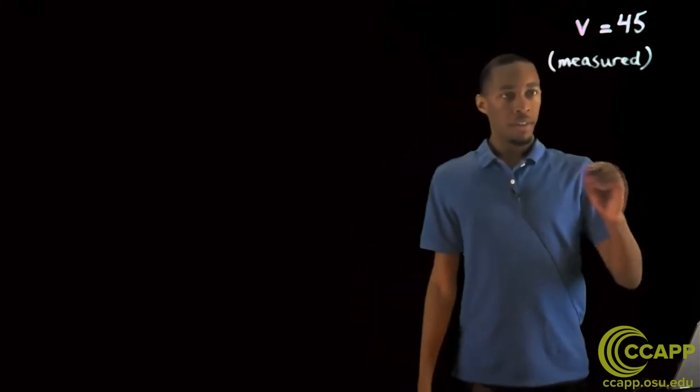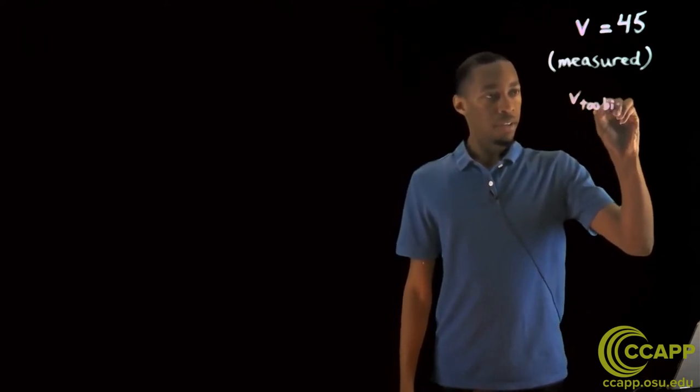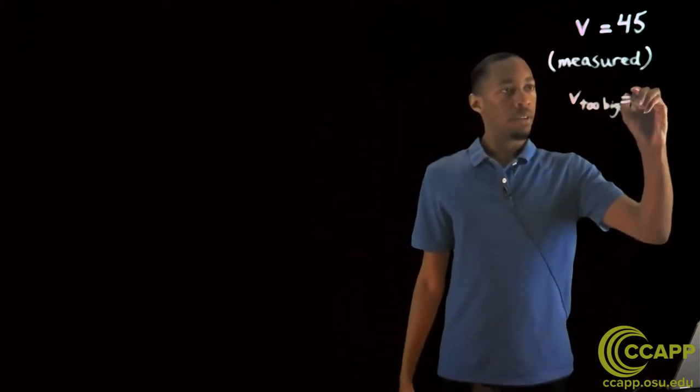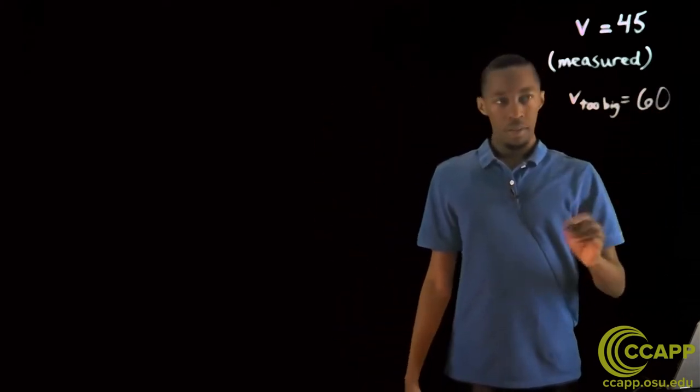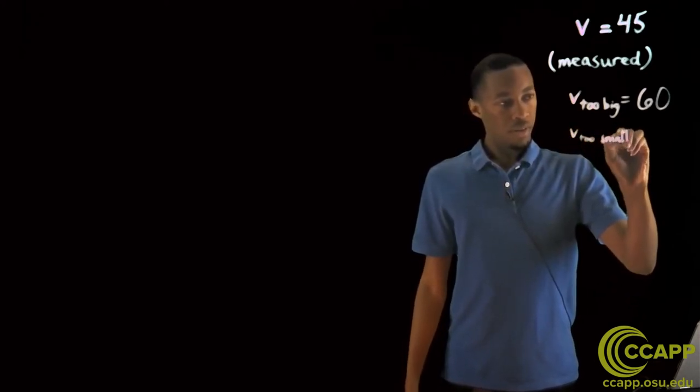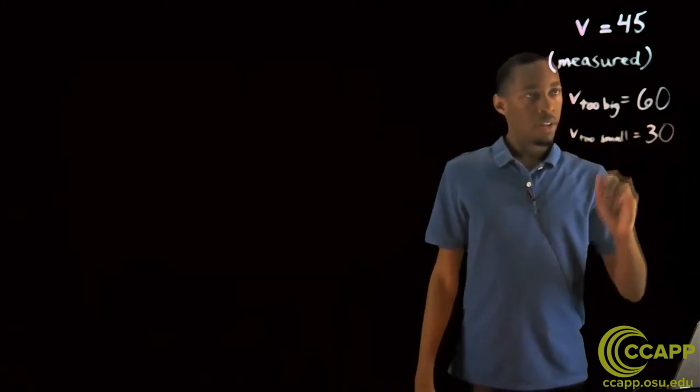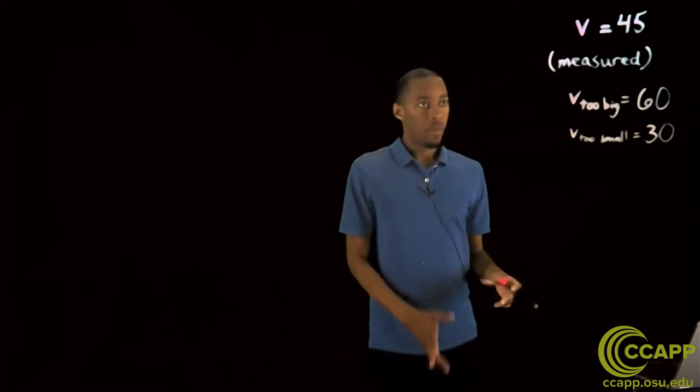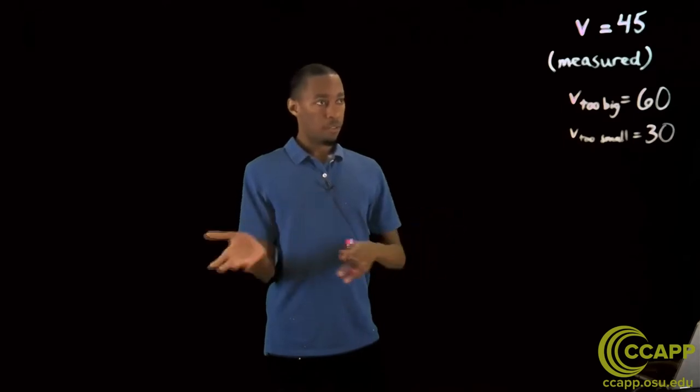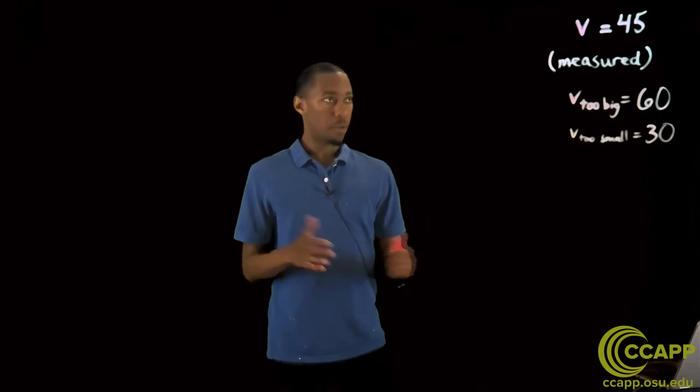It'll simplify our equations later and it makes sense because v sub x was zero. We also have from the code v too big, when it just went way too far off the screen, was at 60. That was one of the first values we tried. And then v too small, what we started with the default value, which was 30. Now, why is this the case?